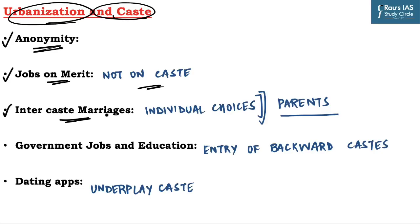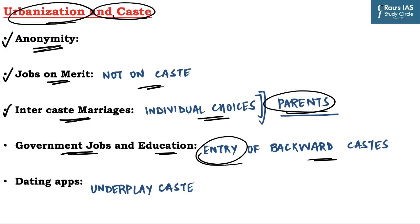The next point is jobs on merit — in urban areas, jobs are distributed based on expertise, ability and merit, and not decided on caste. The next is inter-caste marriages: inter-caste marriages based on individual choices rather than parents' choice are prevalent in urban areas. Due to the reservation policy, people from backward castes got entry to government jobs and educational institutions, helping in providing mobility to lower caste groups. The last point is dating apps — with digital revolution, online matrimonial websites and dating apps are moving away from the old practice of mentioning caste.